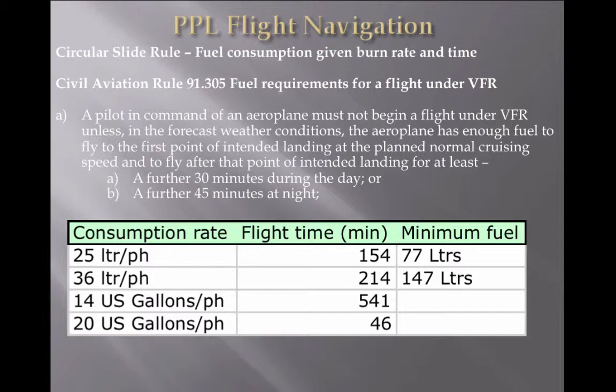Now let's say we're going to be working in US gallons. So 14 US gallons per hour and the flight time is 541 minutes — what is your minimum fuel? The answer is 133 US gallons. Next: 20 US gallons per hour, 46 minutes — work out the minimum fuel. Remember to add those 30 minutes to the flight time to give you the corresponding details. The answer is 25.2 US gallons.